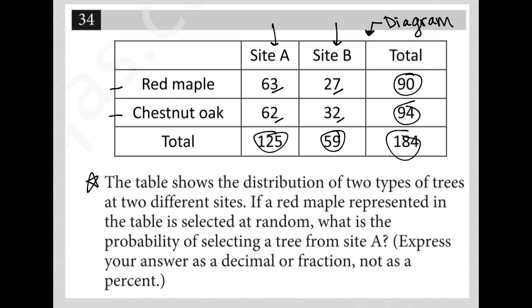How many red maples do we have? We have a total of 90 red maple trees. 63 of them are in site A and 27 of them are in site B.